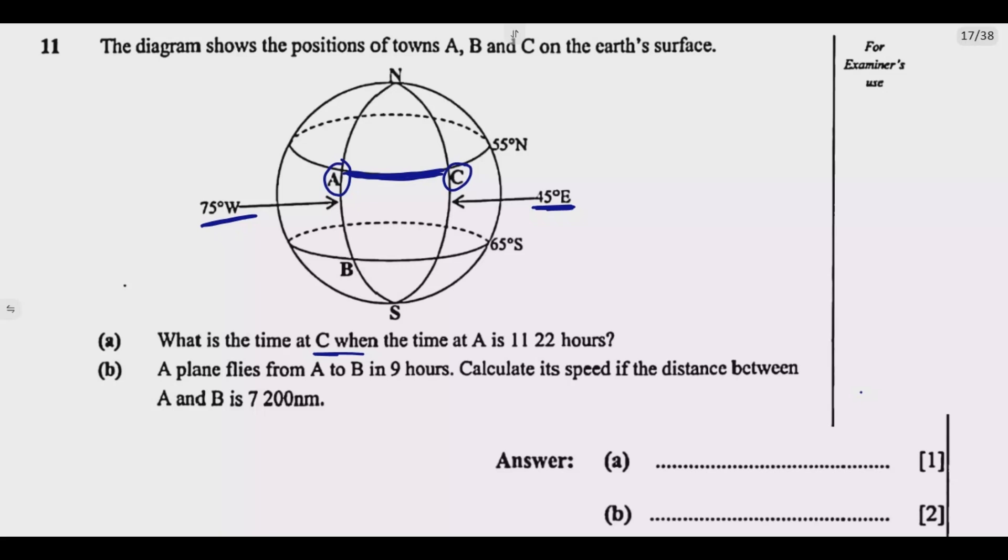So one thing is the time at C will be ahead of the time at A, which is 11:22 hours. The first thing that we need to do is find the total difference between A and C in terms of these longitudes. Since A is on the west and C is on the east, they're on the opposite of the prime meridian, so we need to add their longitudes. The difference in longitude is equal to 75 degrees, which is on the west, we add with 45 degrees, which is in the east, which is going to give us 120 degrees. Always when they are on the opposite side of the prime meridian you add. If they are on the same side, you subtract the smaller one from the larger one.